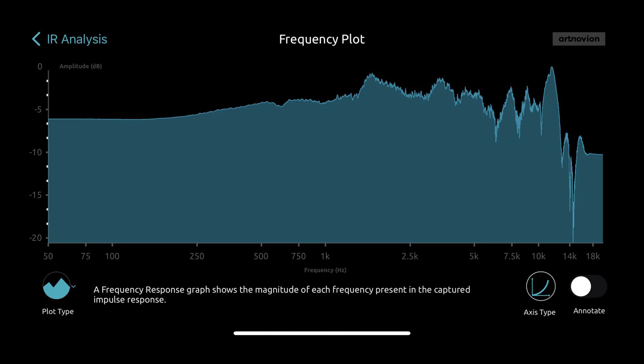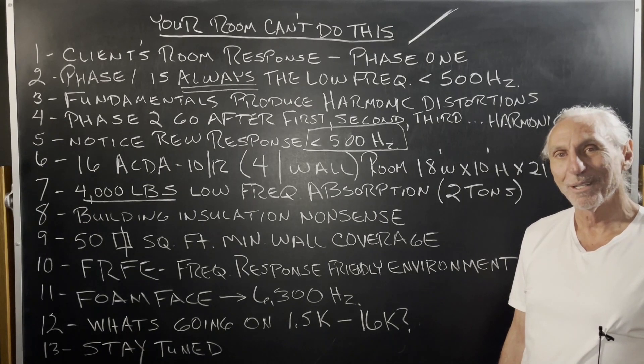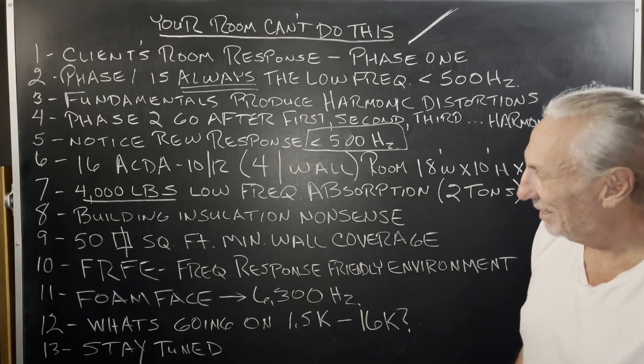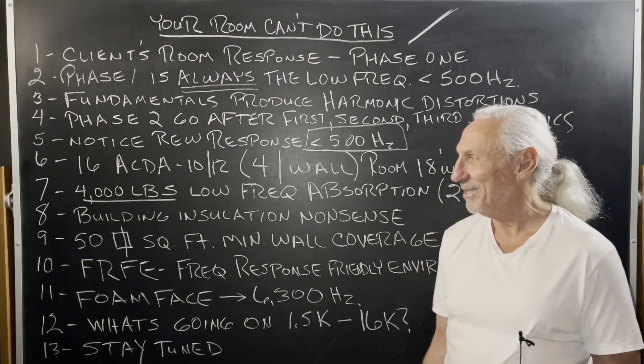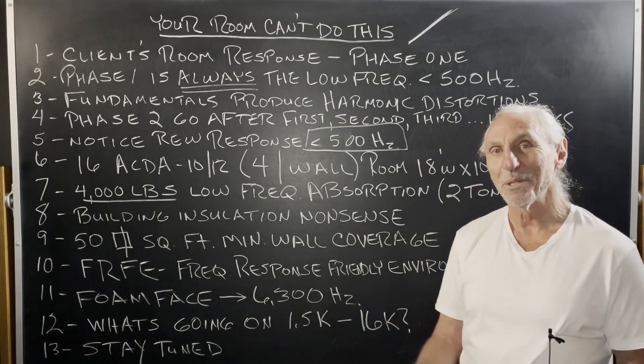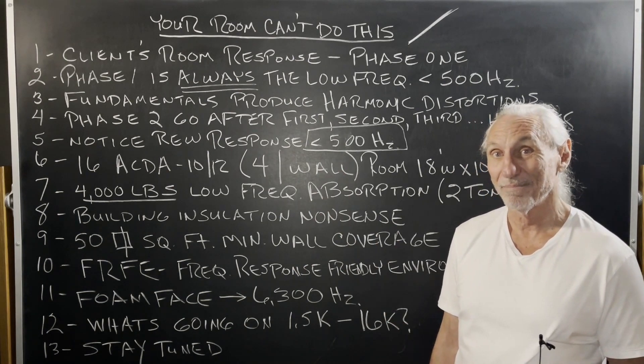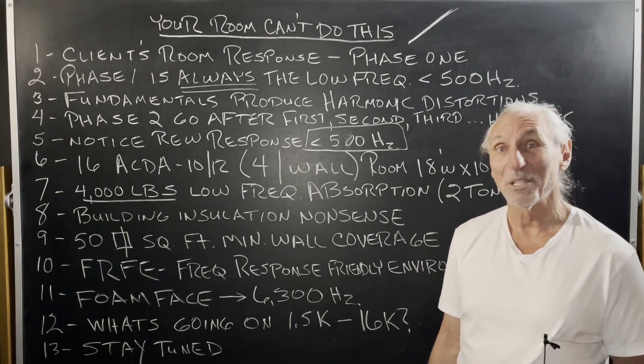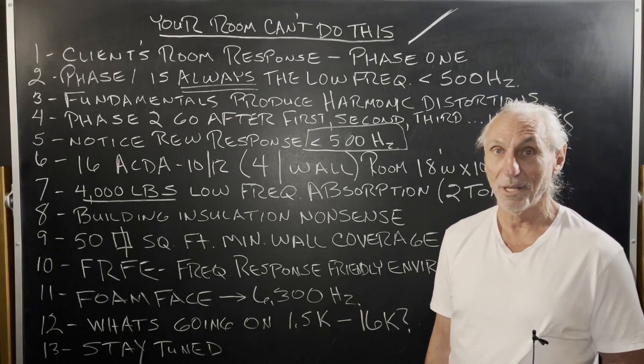4,000 pounds. 16 units, 4,000 pounds. That's two tons of low frequency absorption. Building insulation in a box? Two tons? Two tons get you this curve. What's two tons of building insulation get you? I guarantee you, not that curve. Because there won't be any place to listen to music in the room, because the whole room will be filled with building insulation.